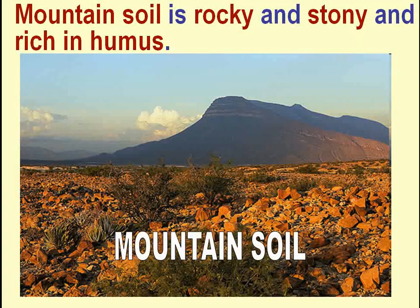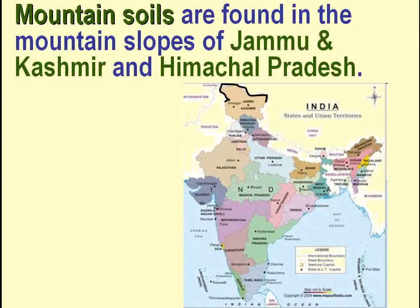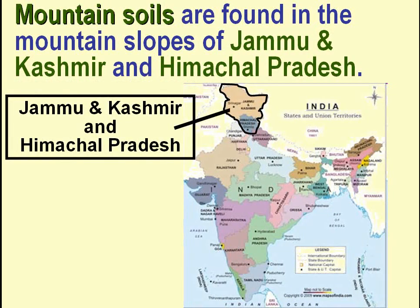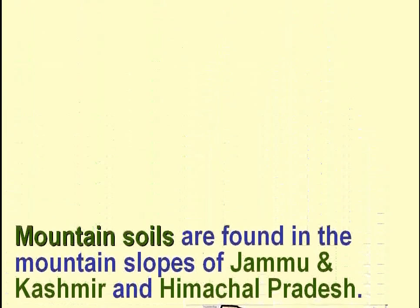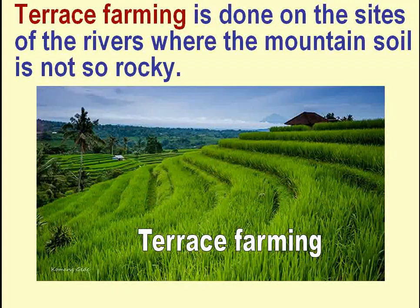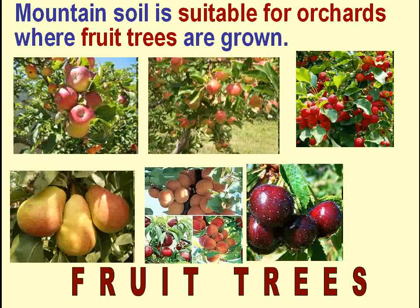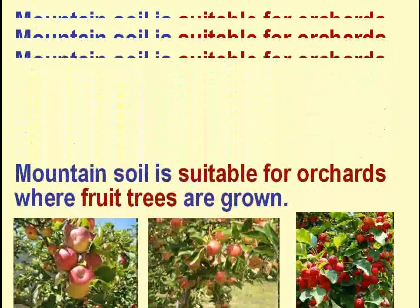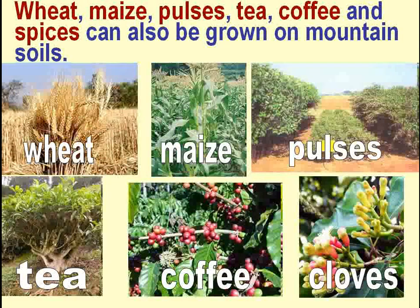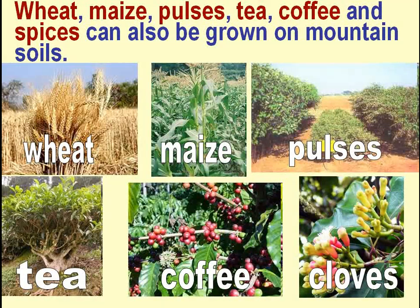Mountain soil is rocky and stony but rich in humus. Mountain soils are found in the mountain slopes of Jammu and Kashmir and Himachal Pradesh. Terrace farming is done on the sides of the rivers where the mountain soil is not so rocky. Mountain soil is suitable for orchards where fruit trees are grown. Wheat, maize, pulses, tea, coffee and spices can also be grown on mountain soils.